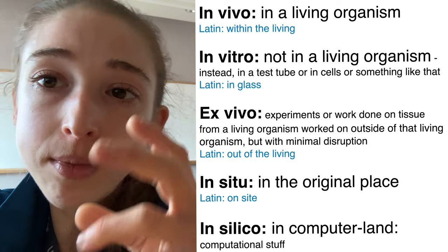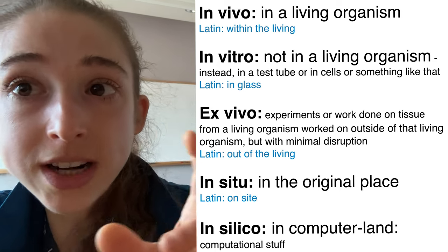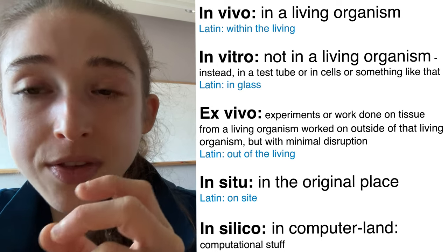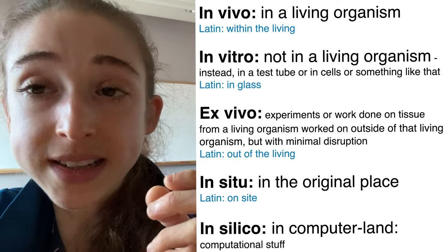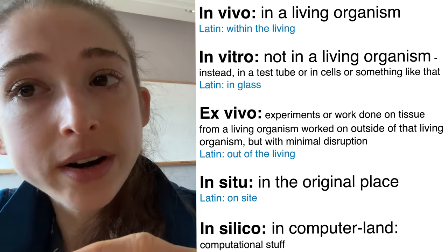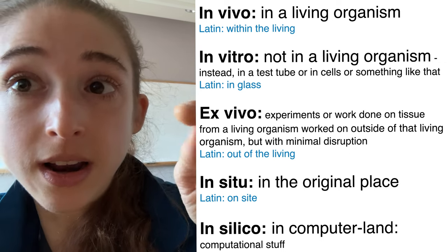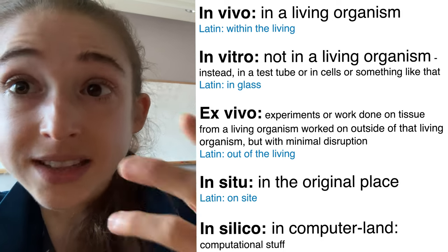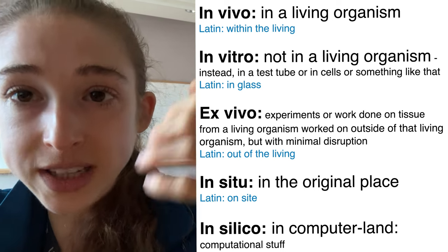Then we have ex vivo, which is taking something outside of a living organism but working with it as close as possible to how it was in the living organism — not trying to manipulate conditions as much. We might be taking an organ or tissue out and working with it as is, rather than breaking it up and trying to grow it forever. Then we have in silico, which is doing things in a computer — things like molecular docking, molecular dynamics, predicting what effect a change to an amino acid in a protein might have on its activity. You're predicting or analyzing things, but none of this involves new physical wet-lab experiments.